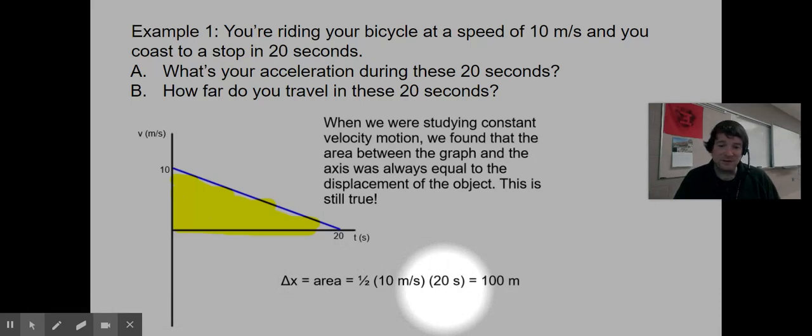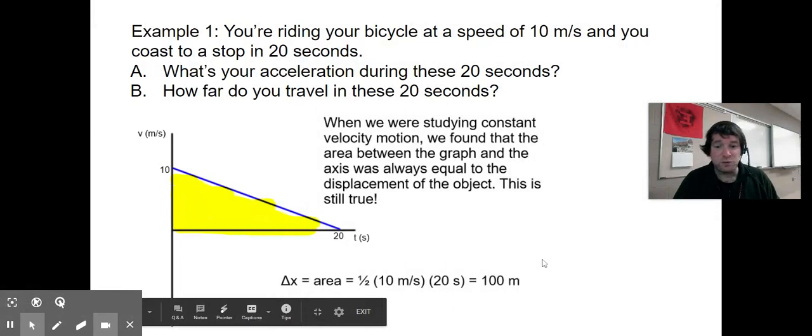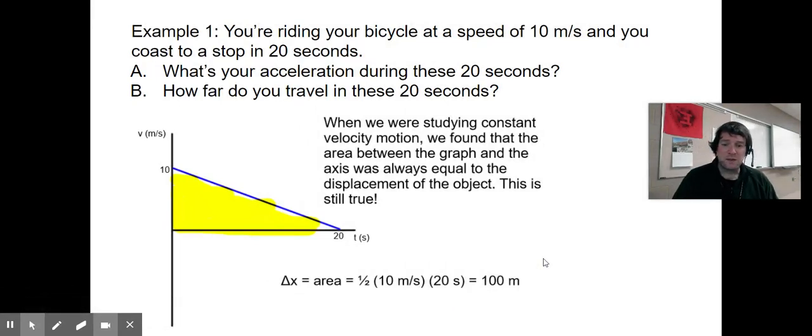And when we do that math, half times 10 times 20. I can do that in my head. If I do the half times 20 seconds, that's 10 seconds. 10 seconds times 10 meters per second gives me 100 meters. How far did the bike go? The bike traveled 100 meters.